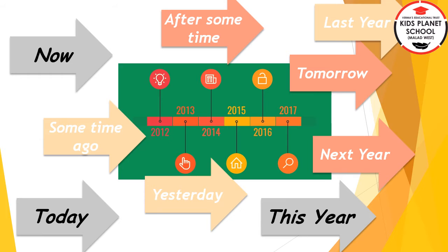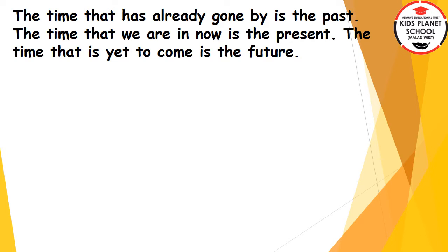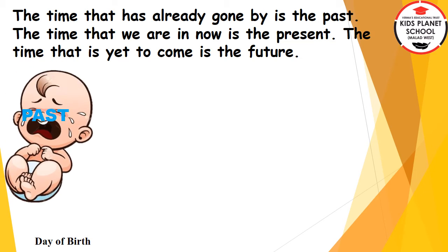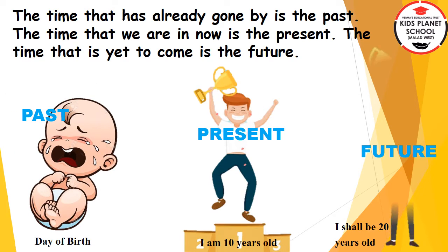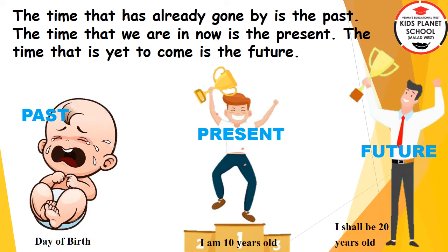When we are talking about after some time, tomorrow, or next year, this means that we indicate the future. The time that has already gone by is the past. The time that we are in now is the present. The time that is yet to come is the future. The past includes many events that have already taken place. For example, if you are 10 years old today, it means that the event of your birth happened 10 years ago in the past.